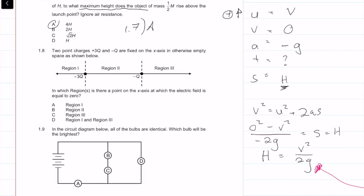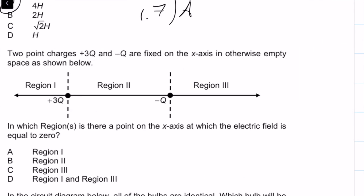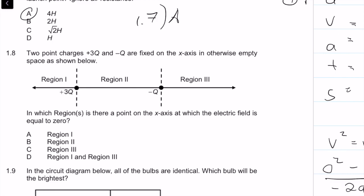Question 1.8: two point charges of 3Q and -Q are fixed on the x-axis. In which region is there a point on the x-axis where the electric field equals zero? I'll draw a diagram. Electric fields point in the direction a positive test charge would move — away from 3Q (which is stronger) and toward -Q.